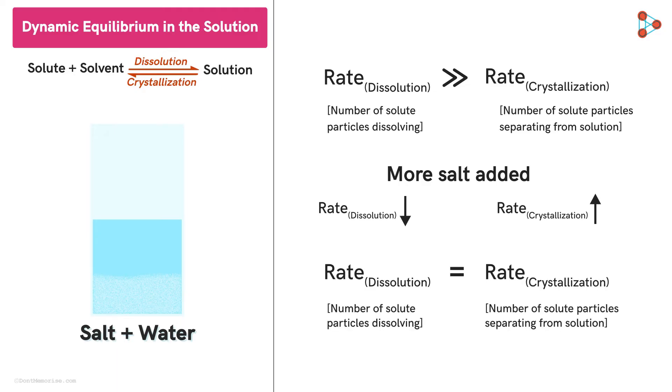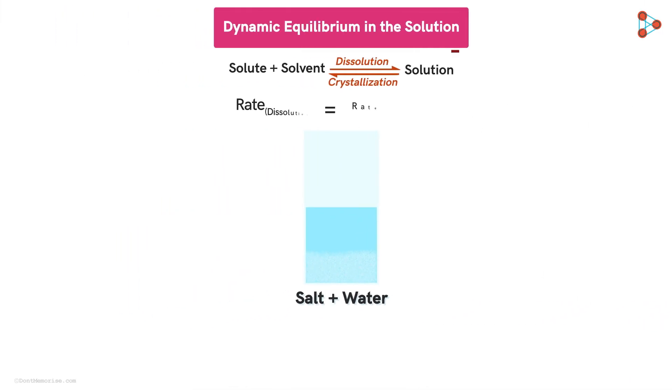So, if you look at the beaker, there is no visible change. We say that no more salt dissolves in the solution. But at the molecular level, solute particles are entering and leaving the solution at equal rates. The solution is in dynamic equilibrium with the undissolved solute.